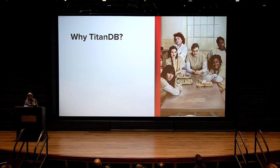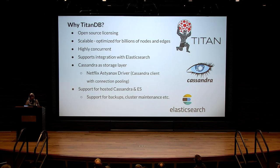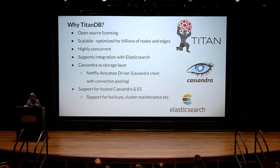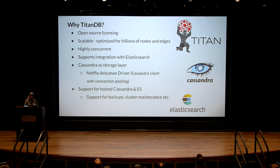Why did we choose Titan DB? Titan was open source, optimized for billions of nodes, highly concurrent, and had support for Elasticsearch and Cassandra. It also supported the Netflix Astyanax driver — the open-source Cassandra client we have at Netflix — and it supported the hosted model of Cassandra and Elasticsearch, making it much easier to maintain.